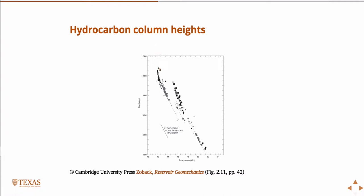You'll see at the top of the reservoir — if I were to sort of draw a line through — this is real pressure, pore pressure with depth. You can see at the top of the reservoir you kind of have these kicks. Whereas below that, there's a hydrostatic pressure gradient right there. This line represents a hydrostatic pressure gradient, and you see that below the top of the reservoir everything increases hydrostatically.